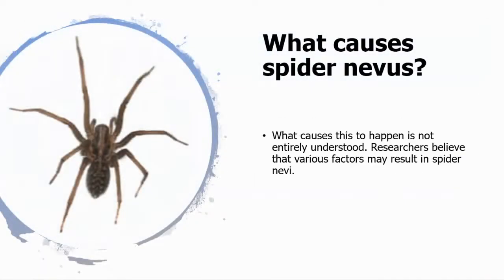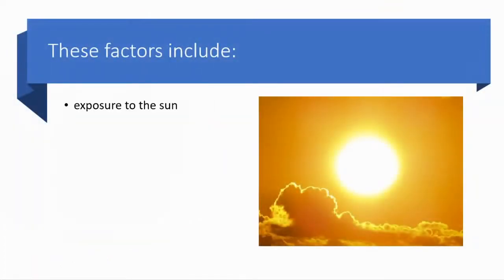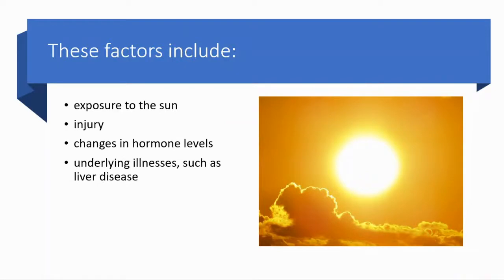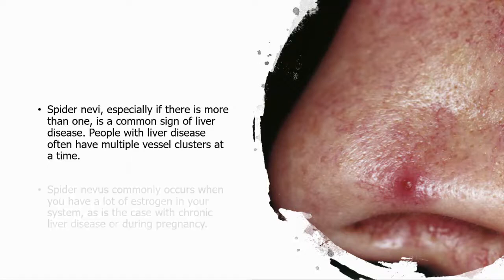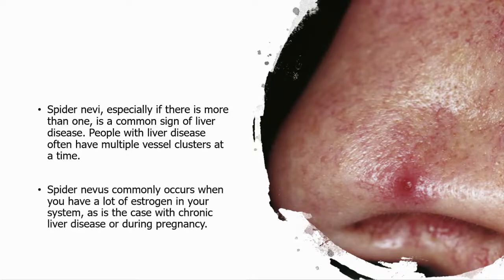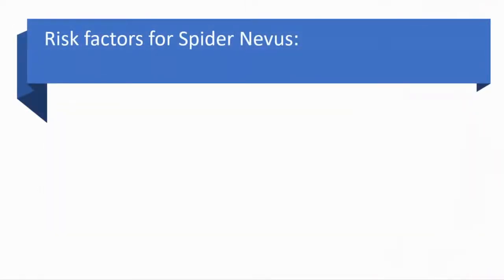What are the causes? The causes are not entirely understood. Researchers believe that various factors may result in this condition, including exposure to sun, injury, changes in hormone levels, and underlying illnesses such as liver disease. Spider nevi, especially if there is more than one, are a common sign of liver disease. Spider nevi commonly occur when you have a lot of estrogen in your system, as is the case with chronic liver disease or during pregnancy.